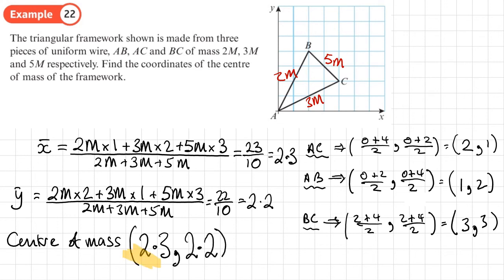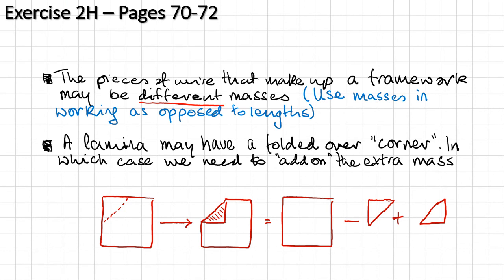You should now be able to do Exercise 2H on pages 70 to 72, followed by the mixed exercise. Just a couple of bits of recap: what we do when we have non-uniform frameworks or laminas is use the given masses directly in our working rather than lengths.